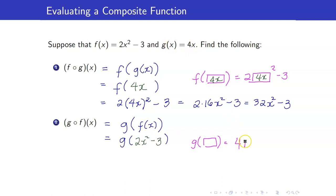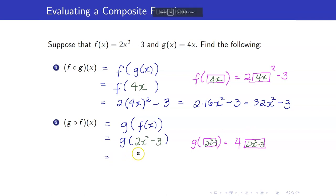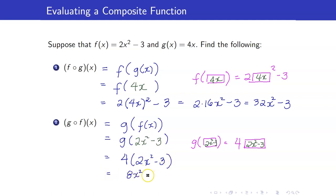But this time around, we want the box to be equal to 2x squared minus 3. So this is 4 times the entire 2x squared minus 3, which is 8x squared minus 12.